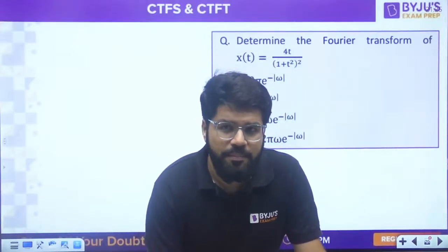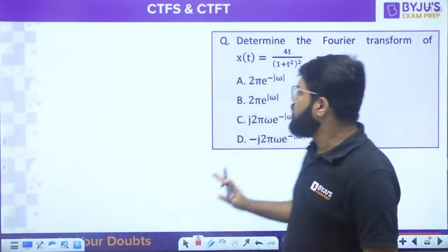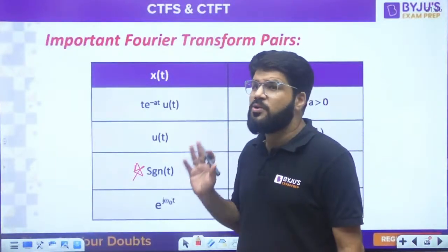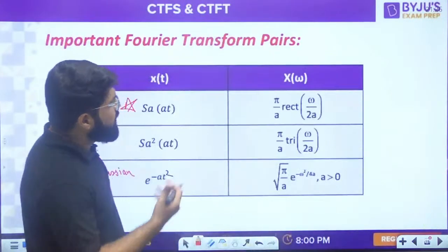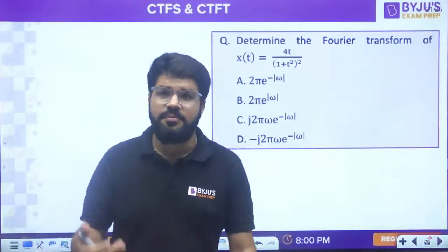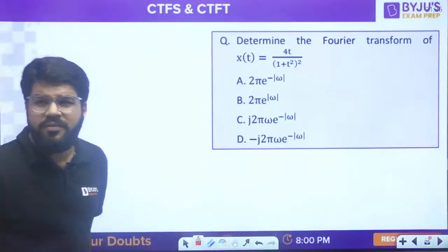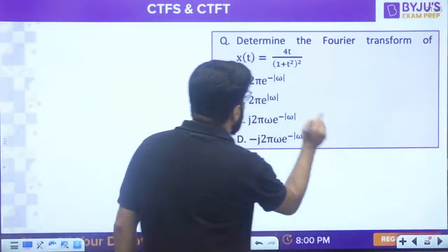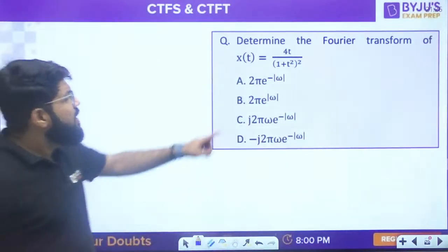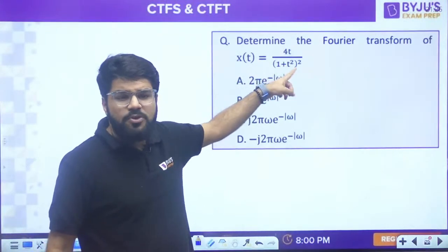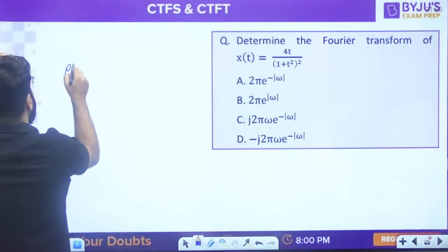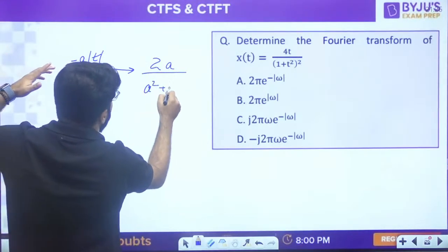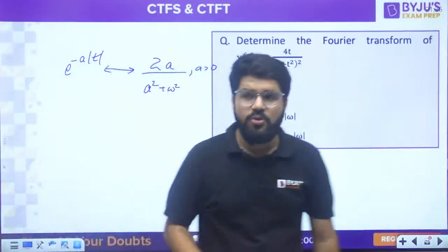I have given you Fourier transform pairs to remember. But there can be questions not only on those formulas. For 4t/(1 + t²)²: we know e^(-a|t|) has FT = 2a/(a² + ω²) for a > 0. Here we see 1 + ω² in the denominator. But there's also t in the numerator and it's squared. So first I'll apply frequency differentiation: t·e^(-a|t|) has FT = j·d/dω[2a/(a² + ω²)].